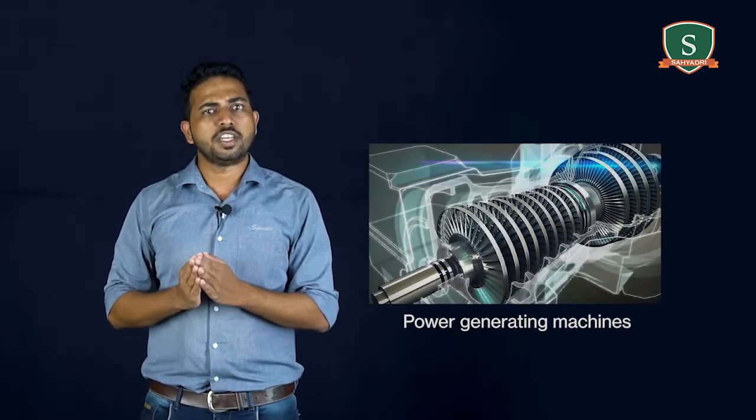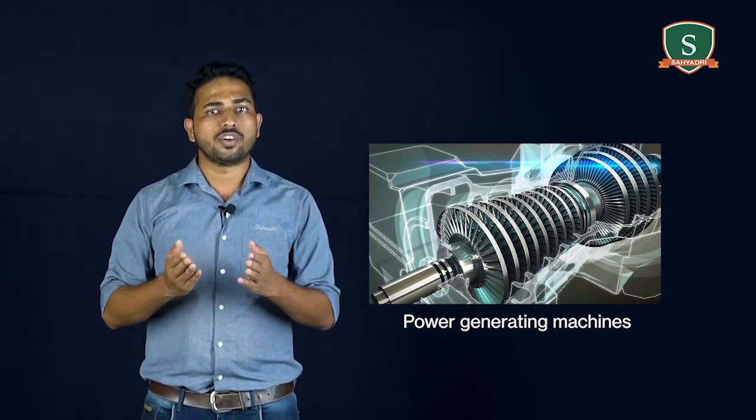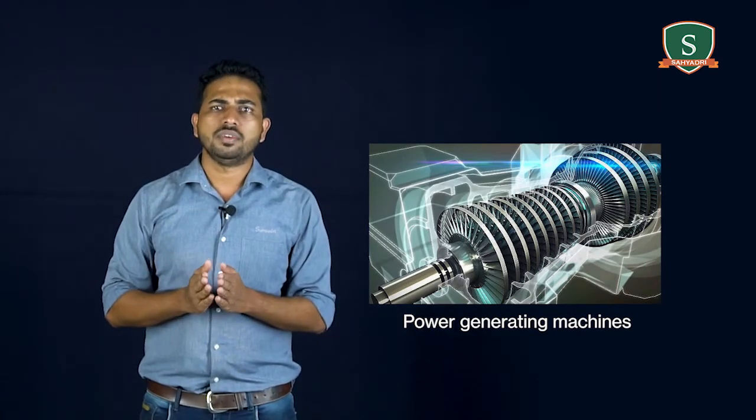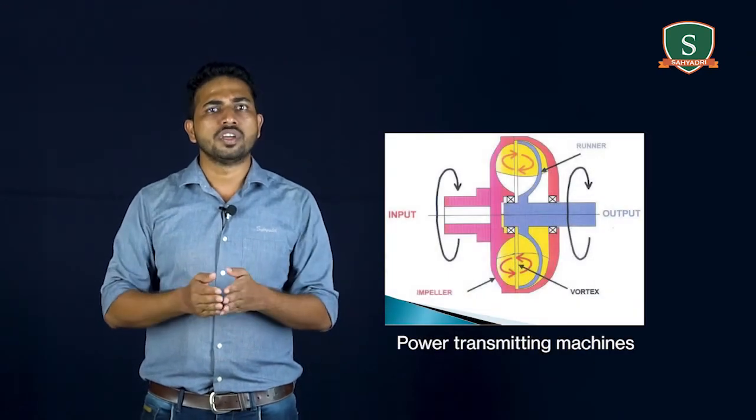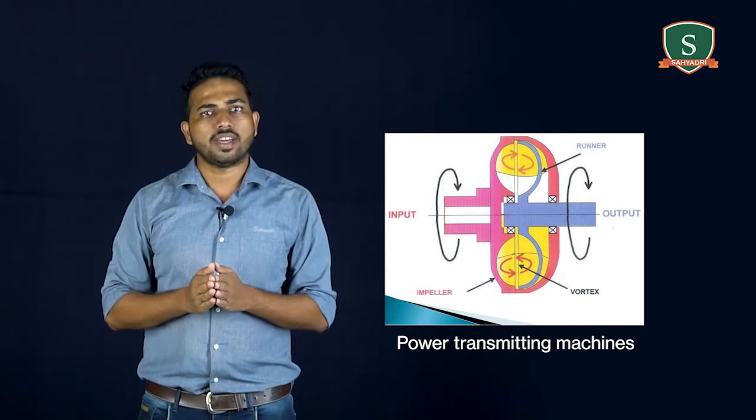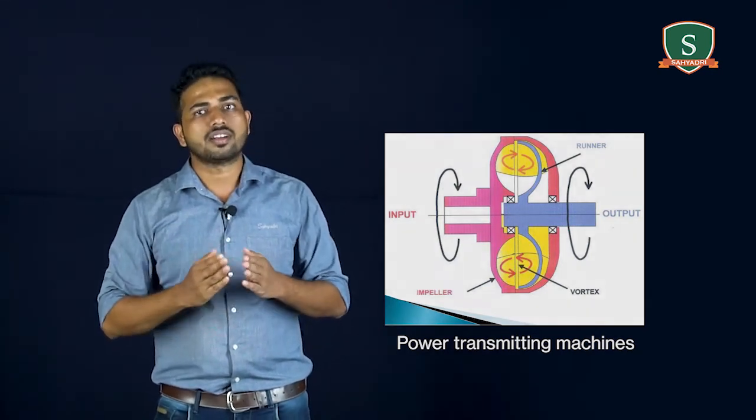Next one is power generating machines. Mechanical energy is generated at the shaft output. For example, steam, gas, and water turbines. Power transmitting machines: power is transmitted from input shaft to output shaft. Examples, fluid couplings, torque converters.